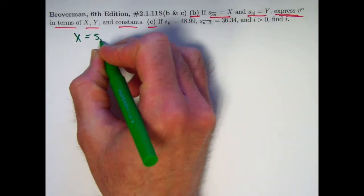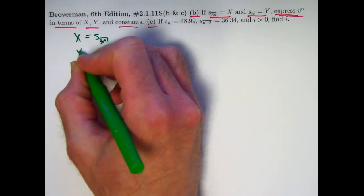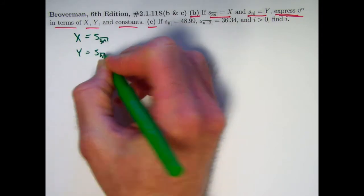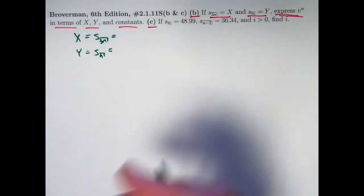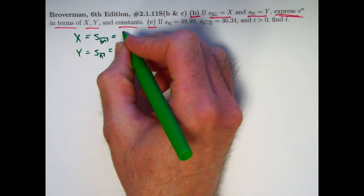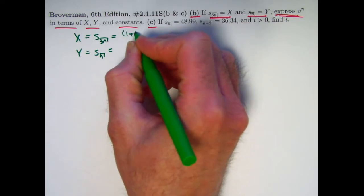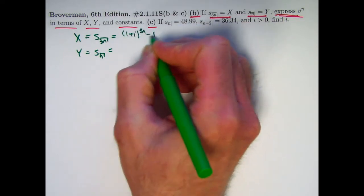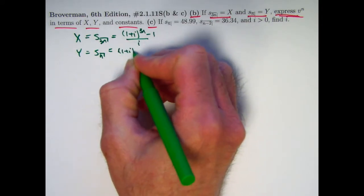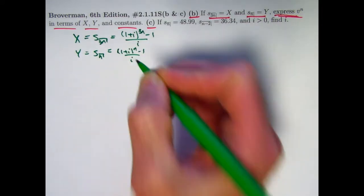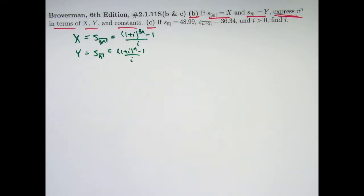X equals S3n, and Y equals Sn. We can use the formula for these future values in terms of i, the effective annual interest rate, if time is measured in years. So this would be 1 plus i to the 3n minus 1 divided by i, and this would be 1 plus i to the n minus 1 divided by i. These tricks I'm going to show you are pretty similar to those in the last video, but a little different in what happens.